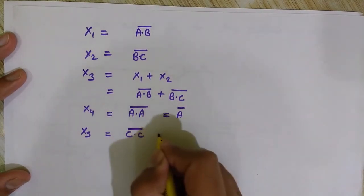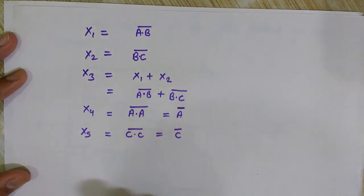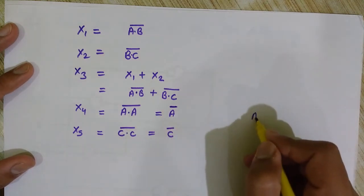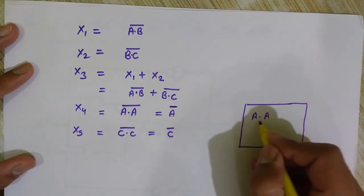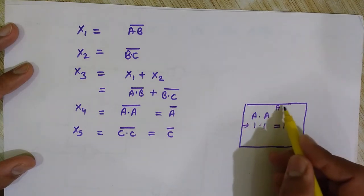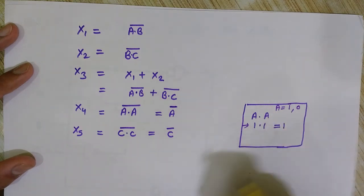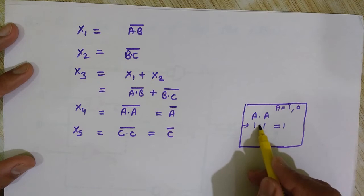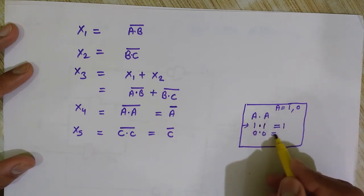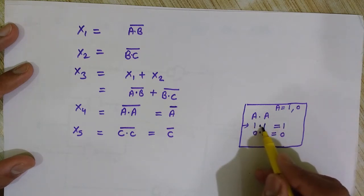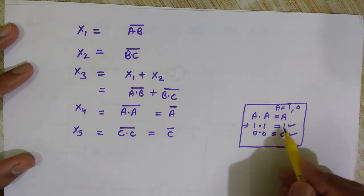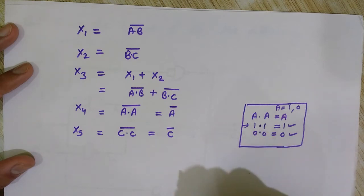Some of you might not understand how A·A = A. Suppose the value of A is 1: then 1·1 = 1. If A is 0: then 0·0 = 0. So when A is 1 the output is 1, and when A is 0 the output is 0 — the output is always the same as the input. Therefore A·A = A.